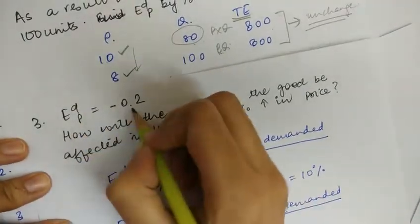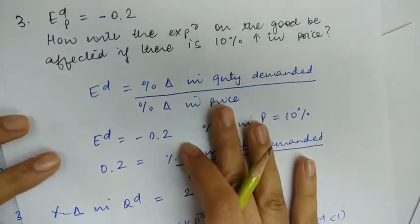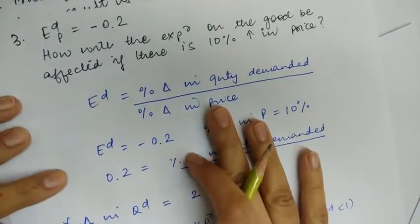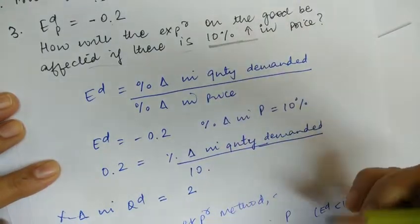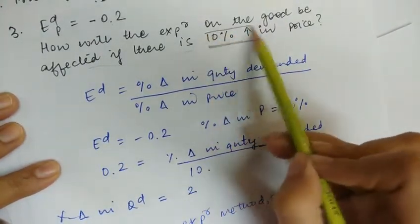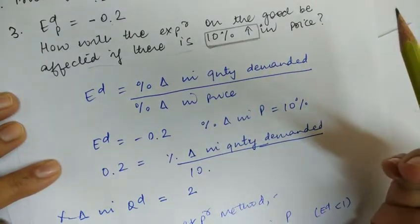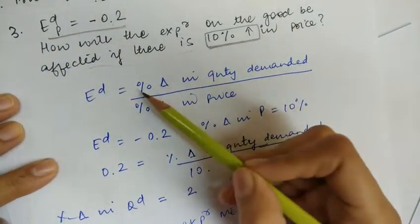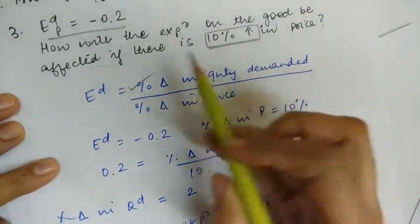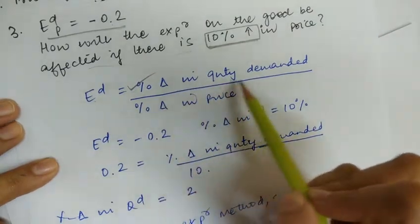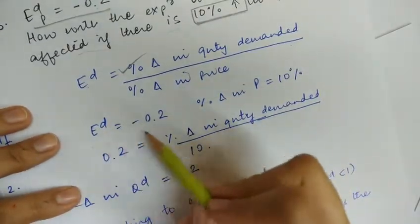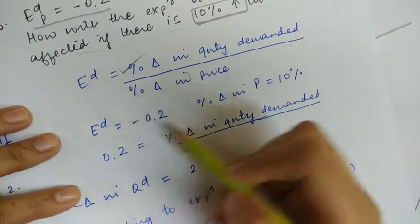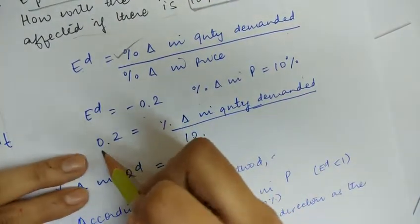For the third numerical: if the elasticity of demand is 0.2, how will the expenditure on a good be affected if there is a 10% increase in price? We can find the percentage change in quantity demanded using the formula: elasticity = percentage change in quantity demanded ÷ percentage change in price. So 0.2 = percentage change in quantity demanded ÷ 10, which gives us a 2% change in quantity demanded.